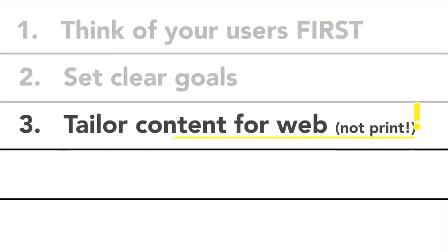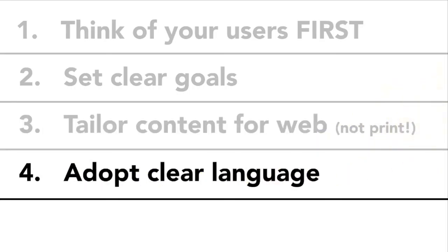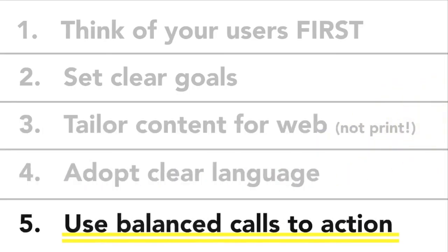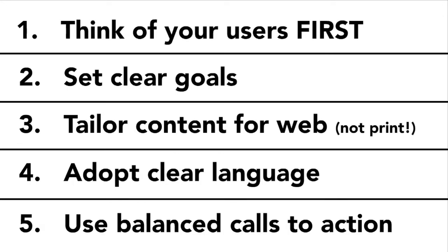In this video, I'll cover five areas that will help you improve your presence online: think of your users first, set clear goals, tailor content for the web, adopt clear language, and use balanced calls to action.